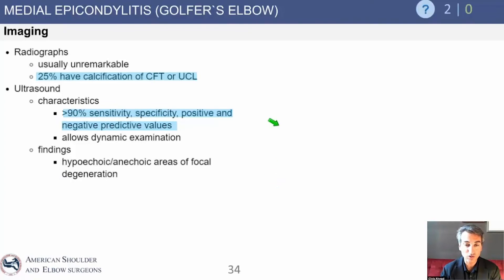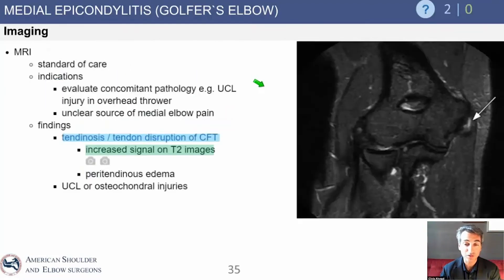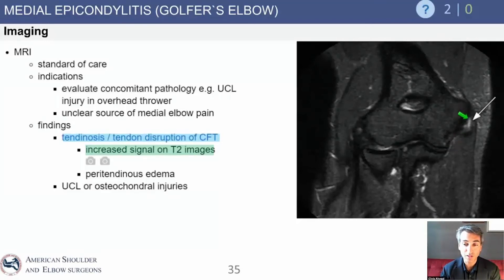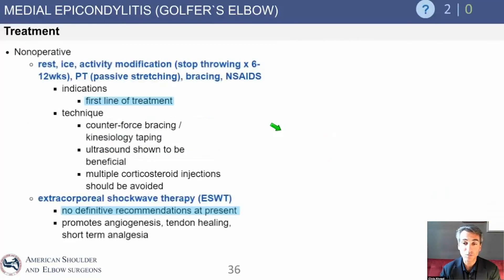X-rays are usually unremarkable, though just like the lateral side there may be calcification. Ultrasound can be used on both the lateral and medial sides — hypoechoic areas may be seen, and ultrasound is getting more popular. I use ultrasound in the office and look for signal changes on both sides of the elbow. MRI is not necessary for diagnosis but can help exclude other injuries such as a UCL tear, especially in a high-level athlete. Here you can see signal change right where the arrow indicates medial epicondylitis at the flexor pronator attachment to the epicondyle.